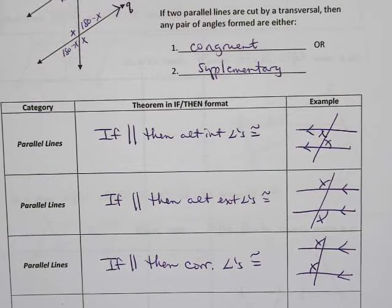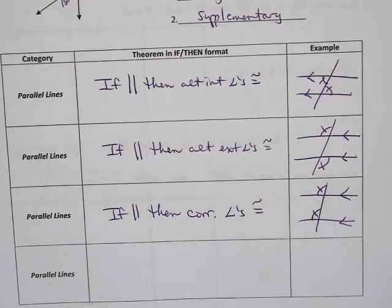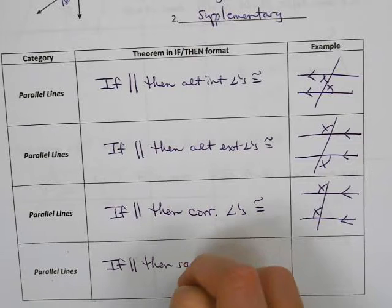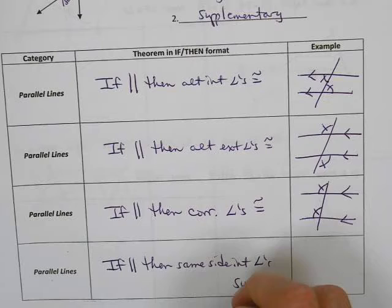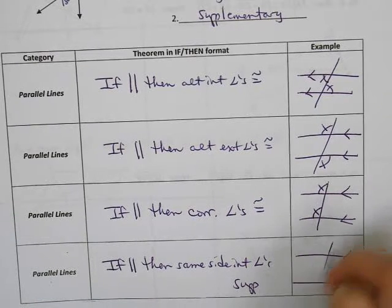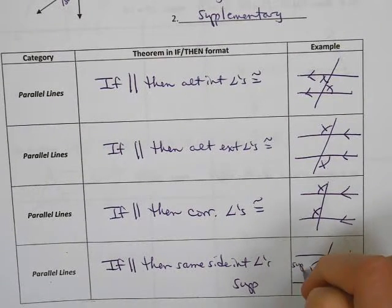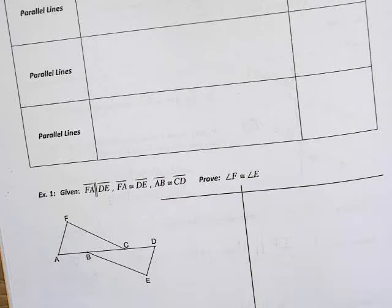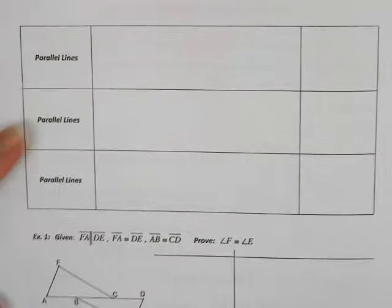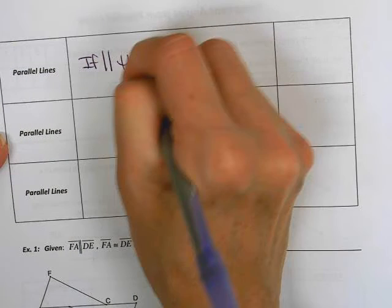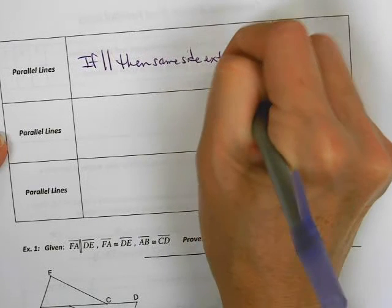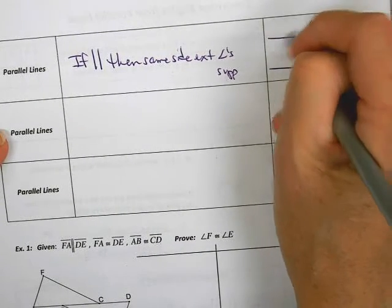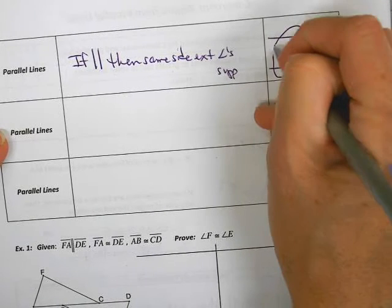Those are all the ones with congruence, so now let's talk about the supplementary pieces. Those are same-side angles, so we can say: if parallel then same-side interior angles are supplementary — if I have two parallel lines I know those two angles are supplementary. We also know that same-side exteriors are supplementary: if we have parallel lines then same-side exterior angles are supplementary. In a quick sketch — parallel lines, transversal — same-side exteriors would be this angle and this angle, which are supplementary.